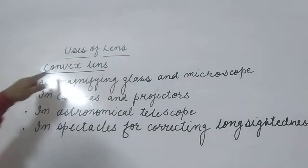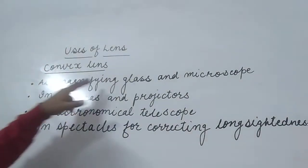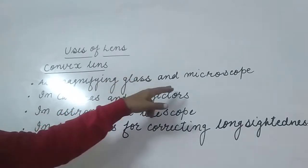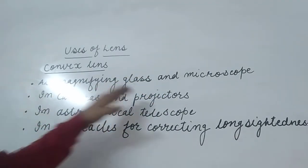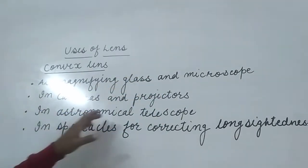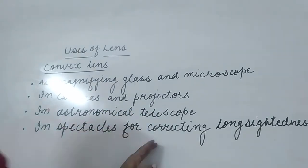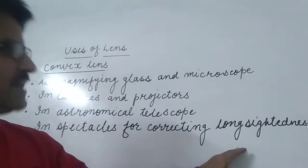These are the uses of convex lens: magnifying glass and microscopes, in cameras and projectors, in astronomical telescope, in spectacles for correcting the long-sightedness.